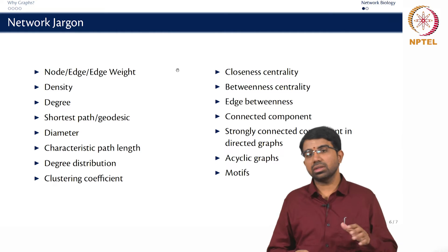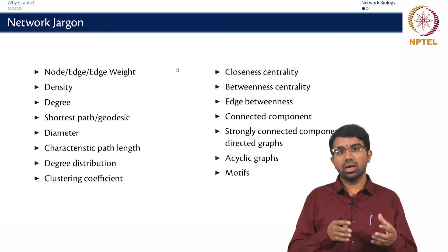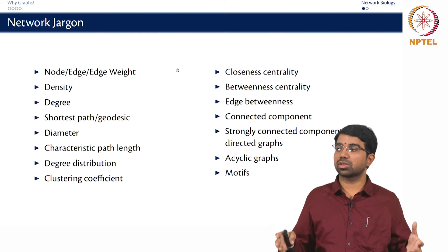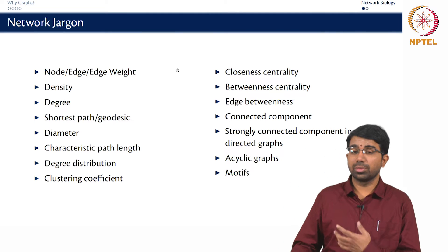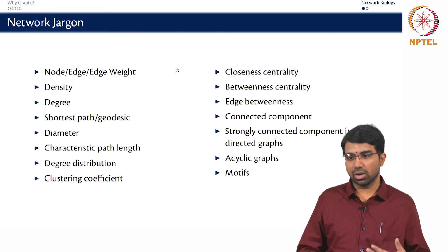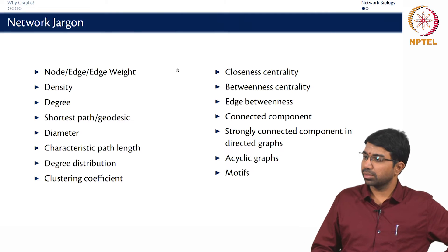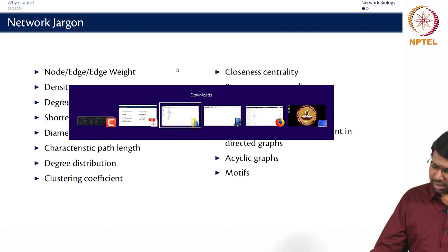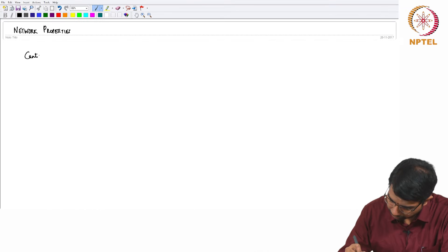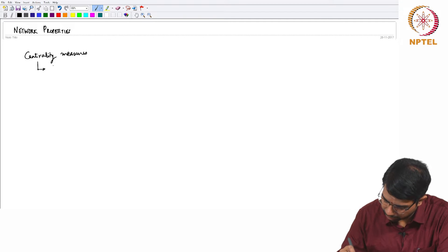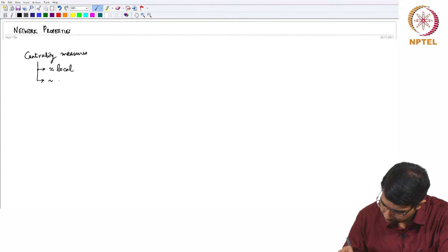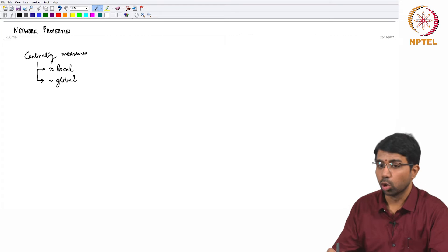We have several different properties to study a node in a network as well as several global characteristics of networks themselves. There are many more interesting centrality measures; we will try to do them in the lab session rather than just look at all the definitions. For example, there is PageRank. We did look at several centrality measures.